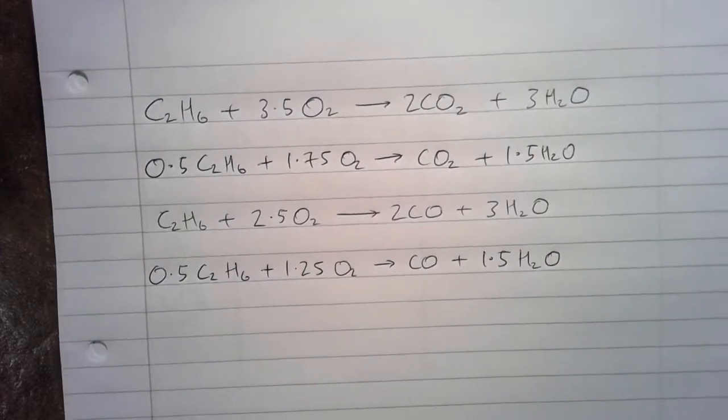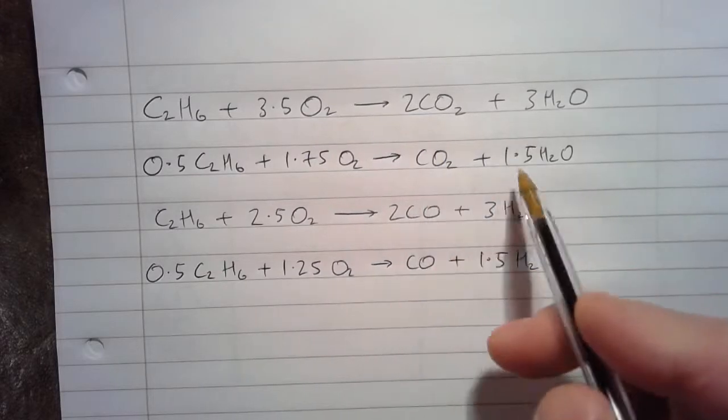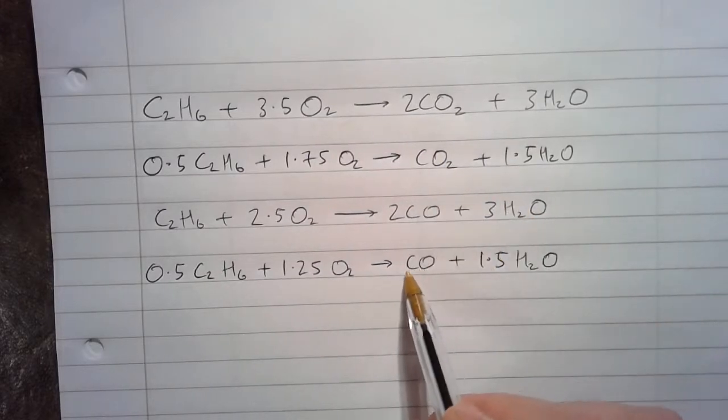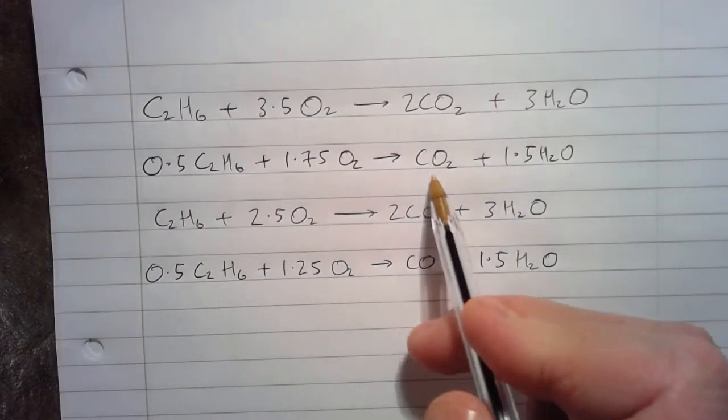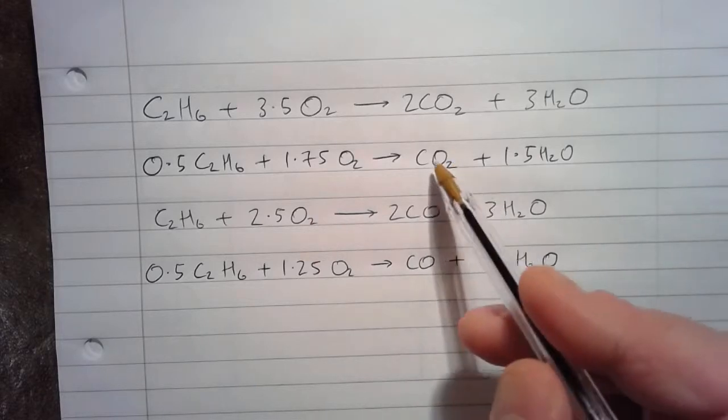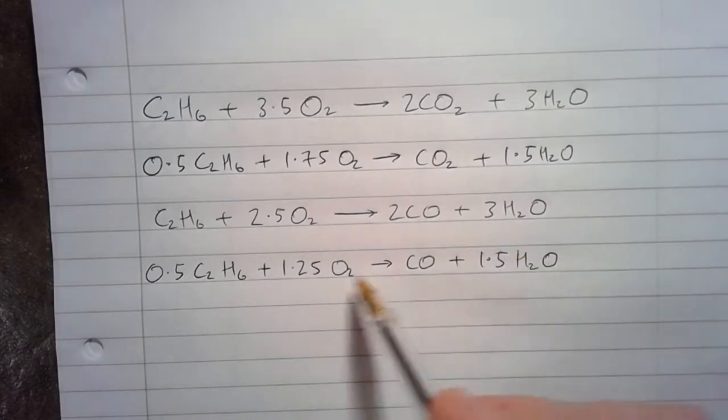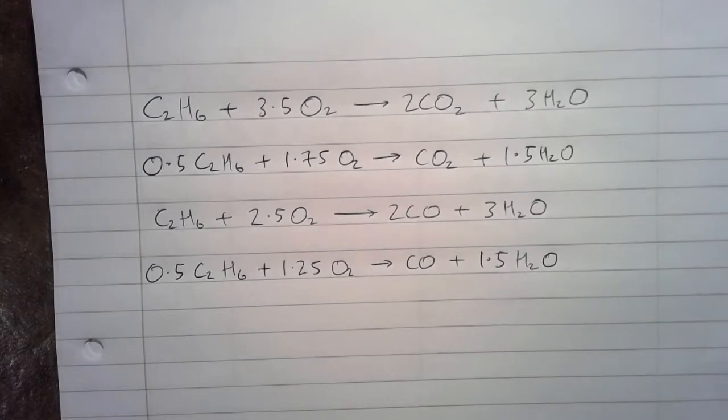So that then allows us to have all the other components in relation to just one lot of CO or one lot of CO2. And because these are the components we can work out first, it'll make it easier to work out the other elements.